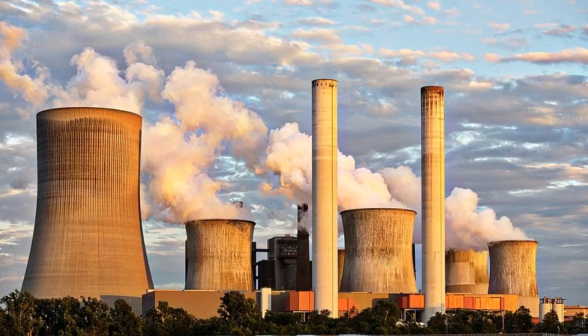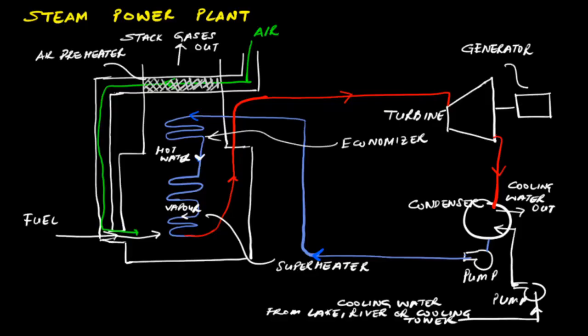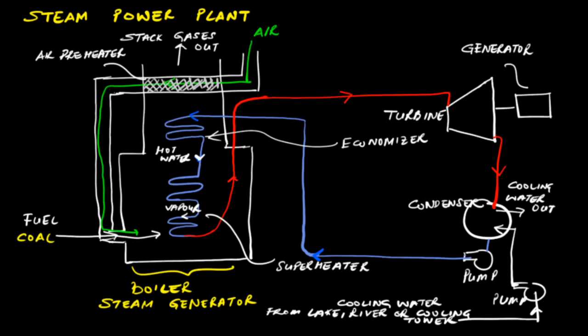Our first example of an engineering system where thermodynamics is applied is the steam power plant. This figure shows a simple diagram of a steam power plant. In a steam power plant, we have a boiler — also called a steam generator — where fuel, which in a steam power plant is coal, and air are fed in to heat up water.